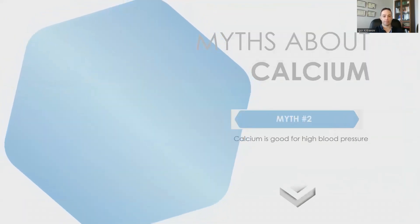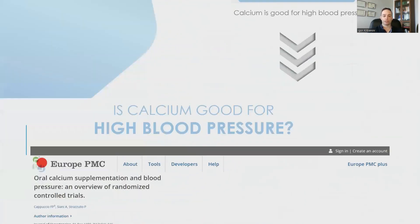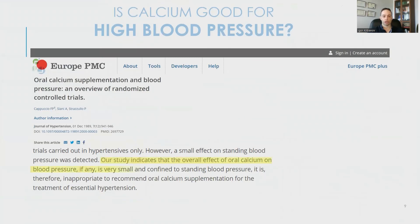Myth number two about calcium is that calcium is good for high blood pressure. In fact, it is not. It doesn't really do a heck of a lot. Here is another study where researchers found that the overall effect of oral calcium on blood pressure, if any, is very small and confined to standing blood pressure. It is therefore inappropriate to recommend oral calcium supplementation for the treatment of essential hypertension.